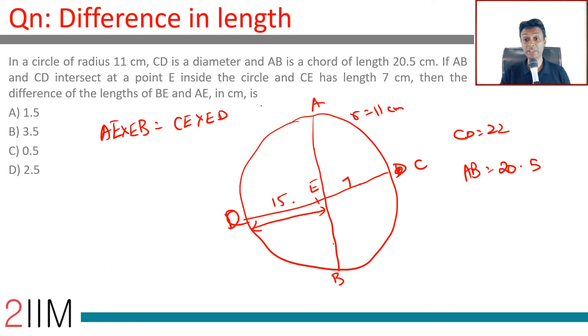Now we know that 15 into 7, CE into DE, is AE into EB. These two add up to 20.5. So two numbers adding up to 20.5, product should be 15 into 7. How am I going to find that? I'm going to write down 15 into 7 and find different combinations.